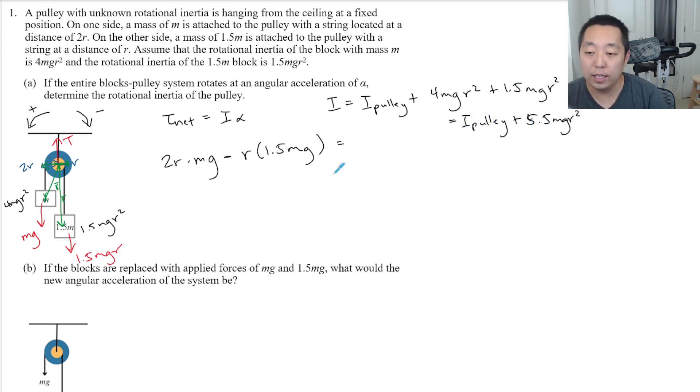So then we say that this is equal to I pulley - I'm just going to call IP for short - plus 5.5 MgR squared times alpha.